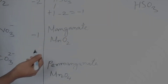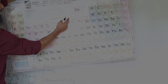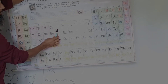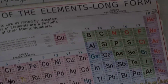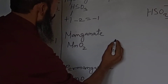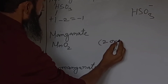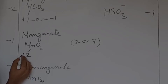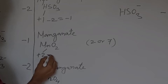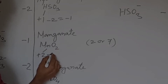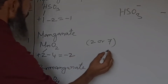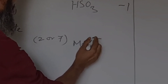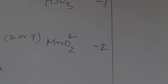Now let's see manganate. The valency of manganese can vary — these are D-block elements also called transition metals or transition elements, which have the characteristic of variable valency. Here we are going to use valency of manganese as 2. It is electropositive, oxygen is electronegative with valency 2. Two atoms of oxygen give plus 2 minus 4, so valency becomes minus 2. Its symbol is MnO2 2-minus.